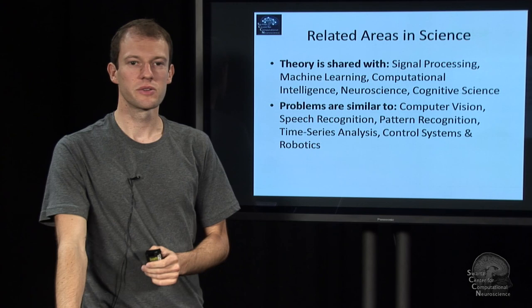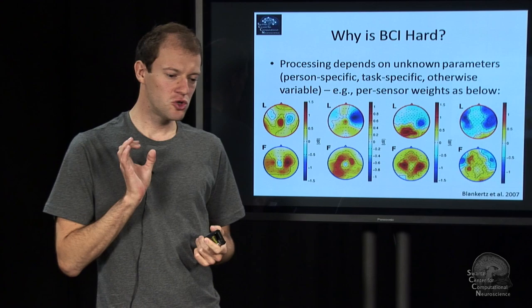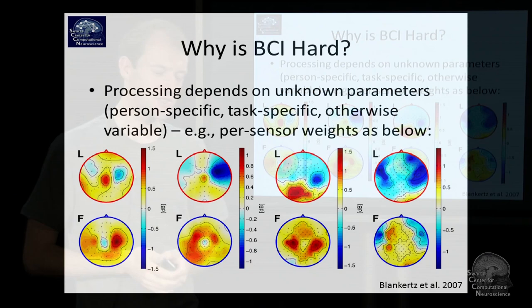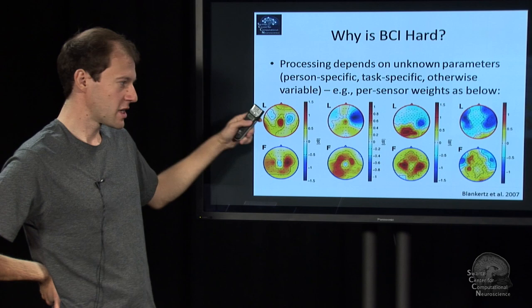And there is one specific reason which is sort of the key reason why it's difficult and that is whatever you do in your BCI, the actual processing depends on a bunch of parameters and these parameters are not really known a priori. You have lots of uncertainty about them. That may be because they're specific to the person or specific to the task that the person is doing. And here's a somewhat striking example of person specific variability.